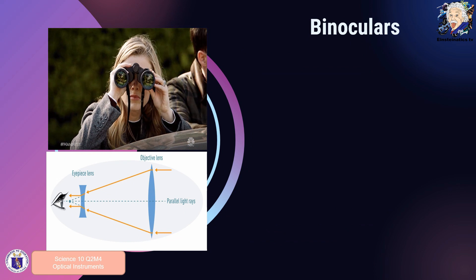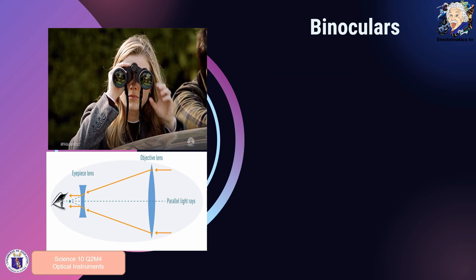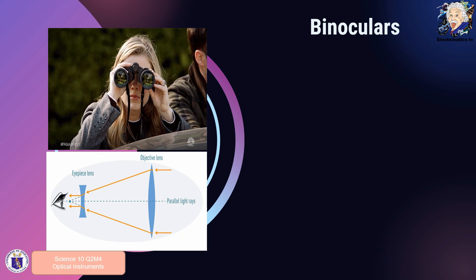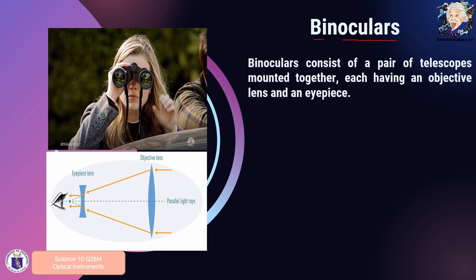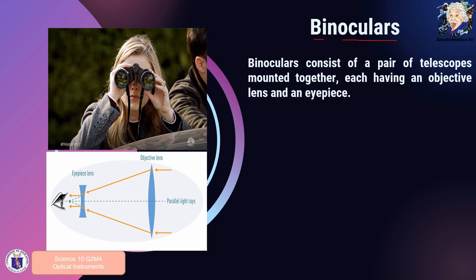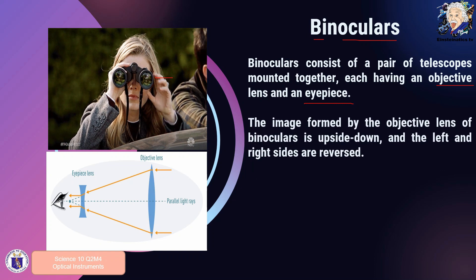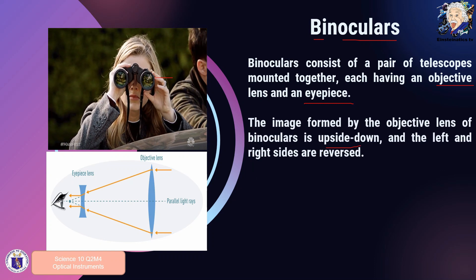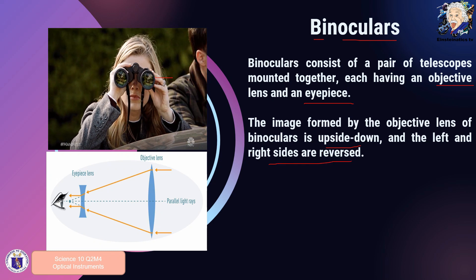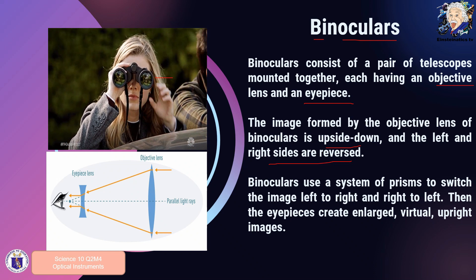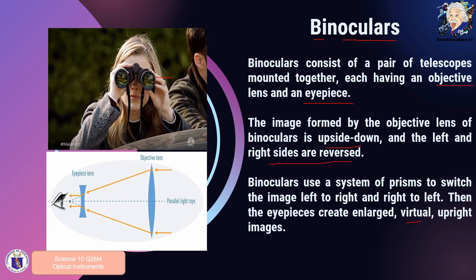The next type of optical instrument is binoculars. From the word itself — 'bi' meaning two and 'oculars' meaning eyepiece — binoculars consist of two telescopes mounted together, each having an objective lens and an eyepiece. The image formed by the objective lens is upside down with left and right sides reversed. Binoculars use a system of prisms to switch the image left to right, and the eyepiece creates enlarged, virtual, upright images.